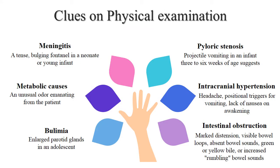Some clues are found on physical examination. In meningitis: a tense bulging fontanel in a neonate or young infant. In pyloric stenosis: projectile vomiting in an infant aged 3 to 6 weeks. In metabolic acidosis or other metabolic cause: an unusual odor emanating from the patient. In intracranial hypertension: headache, positional triggering of vomiting, lack of nausea on awakening. In bulimia: enlarged parotid glands, especially in adolescents. In intestinal obstruction: marked distension of the abdomen, visible bowel loops, absent bowel sounds, green and yellow bile, and increased rumbling bowel sounds.